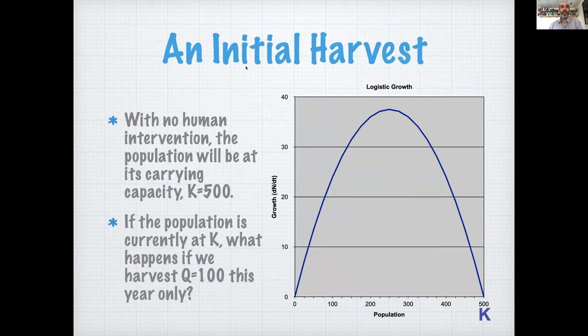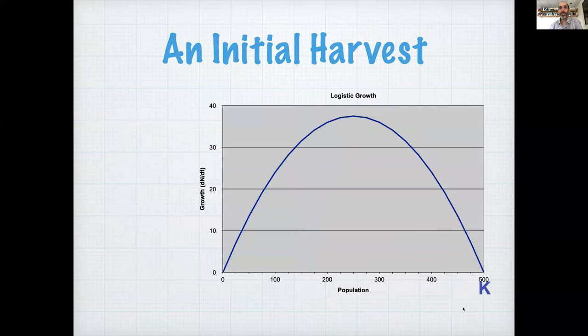So like the slide says, with no human intervention, the population will go to its carrying capacity at 500 because the population growth rate is positive through this whole range of population sizes. So then we would ask, what happens if we harvest with a quota of 100 individuals and we do that just once? So let's zoom in a little bit. We'd have that initial harvest and the population would start at K, at 500, it would drop down to 400.